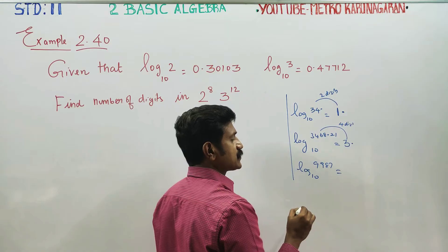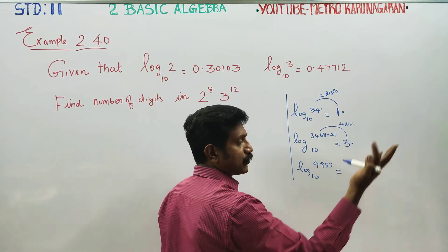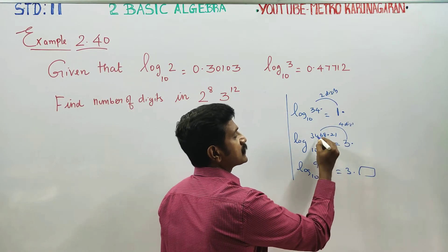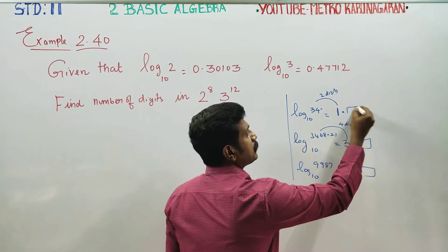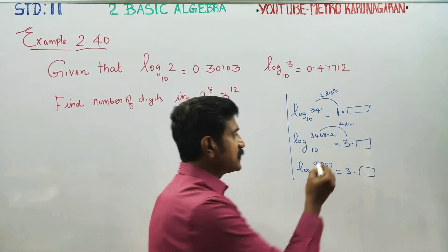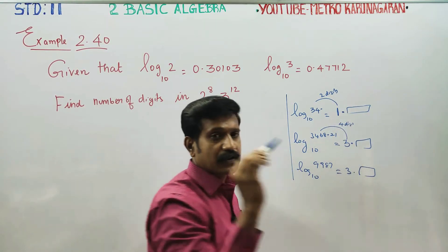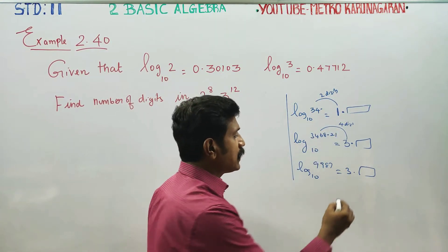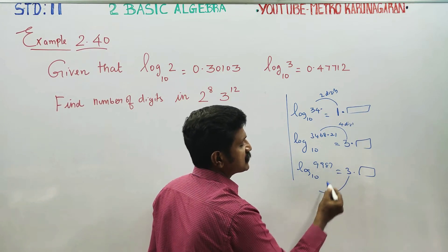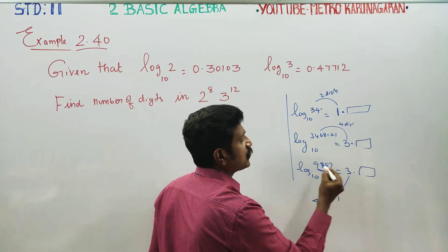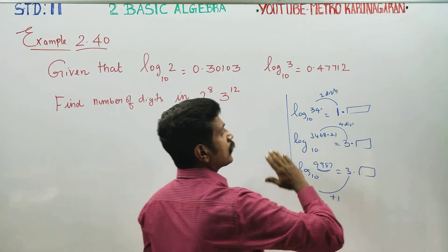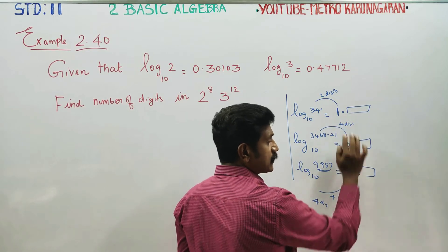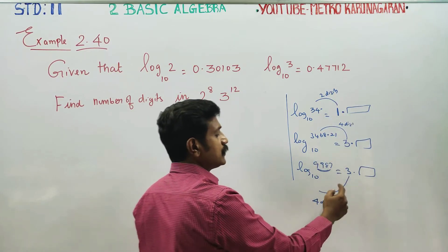Logarithm we can do. Characteristics we can do — 3. Using the logarithm table, we can do the Medhi balancing. Clock tables and logarithm tables we can do. The decimal part we can do. Number of digits — this number, add one. Add 4 digits. Logarithm value you can do. Characteristics you can do — logarithm values, numbers written, digits.